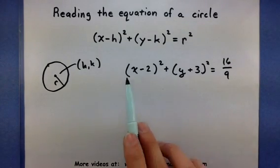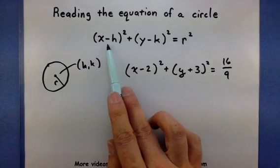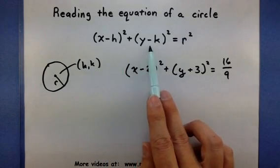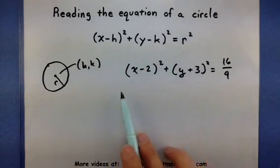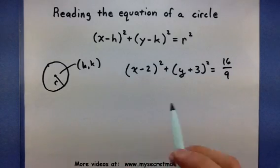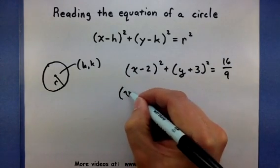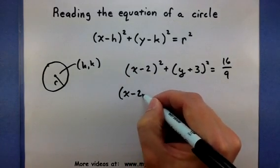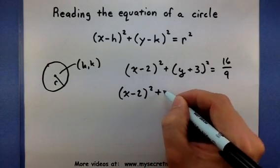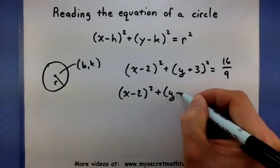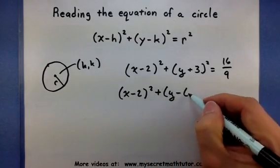Now if we look at our template, we notice that x minus h and y minus k. So I want to read this one in much the same way. So I really want to look at it as x minus 2 squared plus y minus a minus 3.